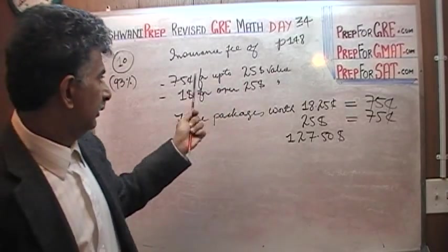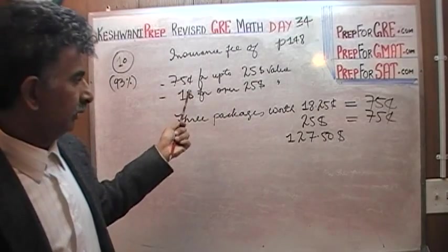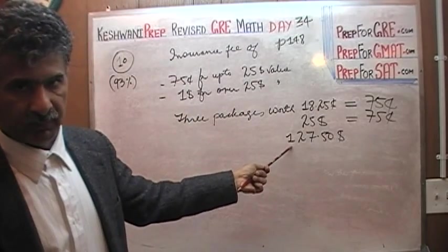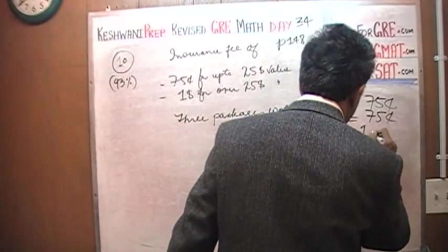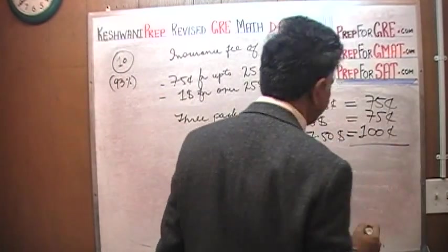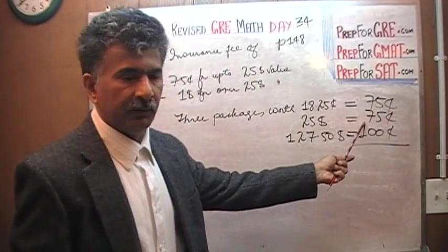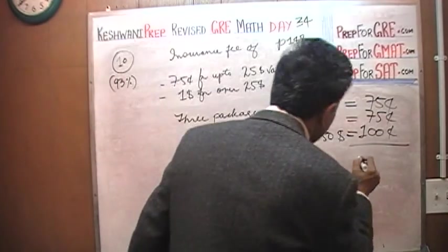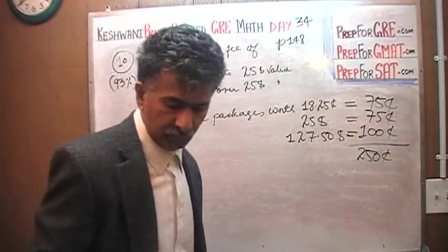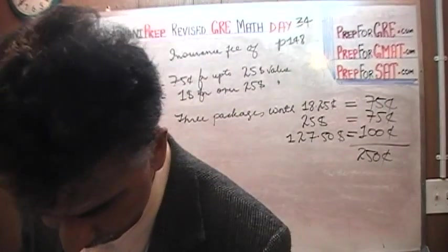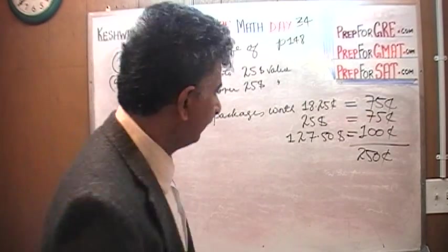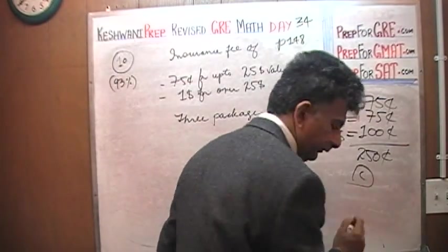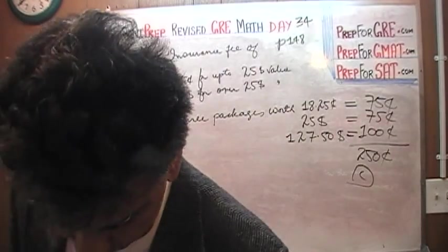This package, which is over $25, is going to cost us $1. That's it, that's our answer. 75 plus 75 is 150, plus $1 is $2.50. The answer is C. That's it. Let's do the next one.